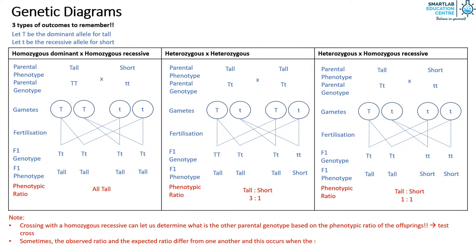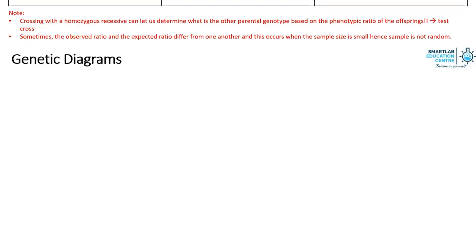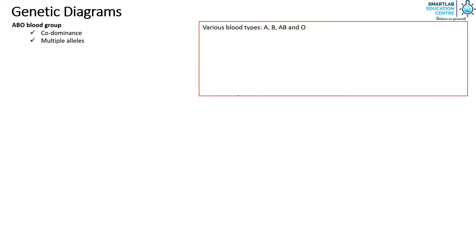Now we will look at the ABO blood groups. As we explore the ABO blood groups, we will cover codominance and multiple alleles. We know that there are four types of blood groups: blood group A, B, AB, and O. There are three gene alleles responsible for the blood groups and they are as shown.